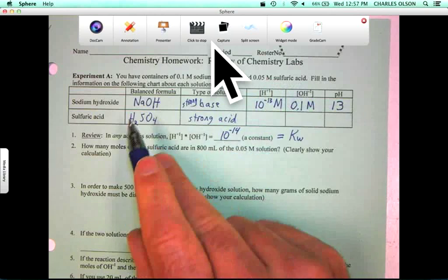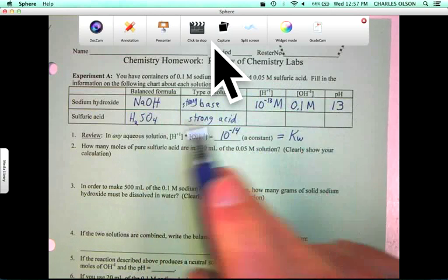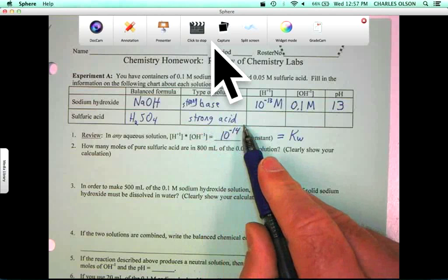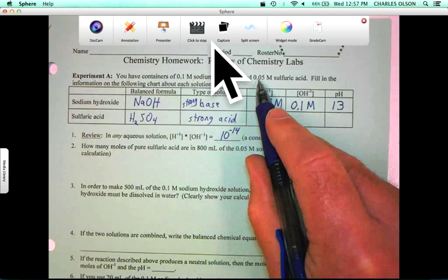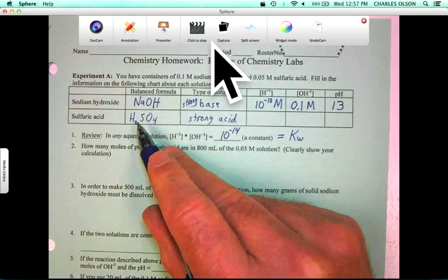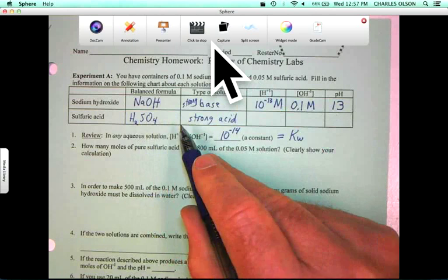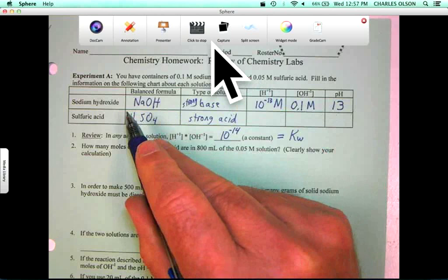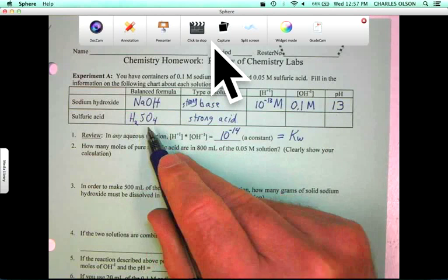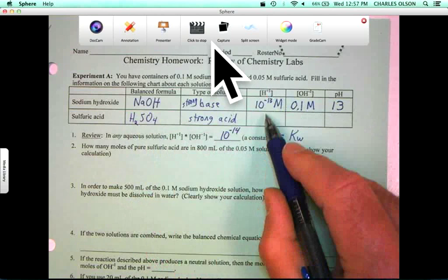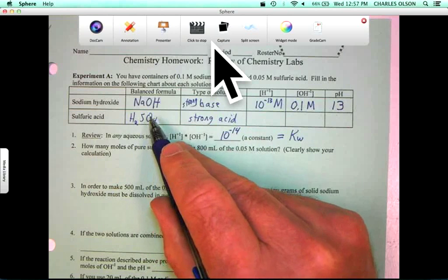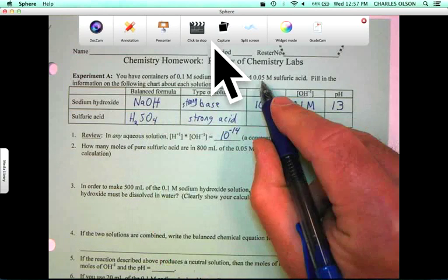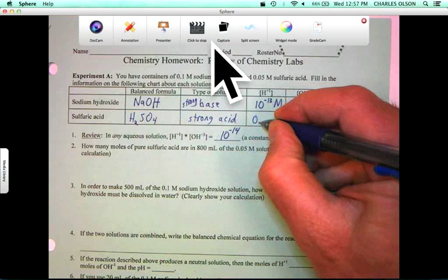So our strong base and our strong acid. Now, the sulfuric acid dissociates to produce two hydrogen ions in solution. So the concentration of hydrogen ions from sulfuric acid in solution will be double 0.05, it's 0.1 molar.